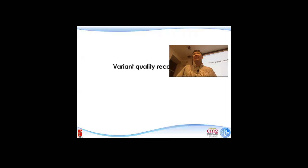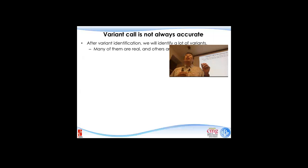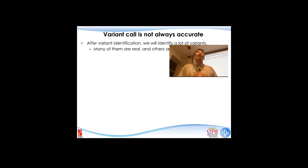Now let's move on to variant quality recalibration — still focused on variant identification but from a slightly different angle. We are no longer talking about base quality being misreported by the sequencer. This is about: when I call a variant, there is a statistical Q value affiliated to it indicating what percentage chance I made a mistake — but is that estimation really accurate? After variant identification, if you did whole genome sequencing, you could identify a few million variants — around three million. Whole exome sequencing, anywhere from 30 to 40 thousand variants. Many of them are real, but others are not.